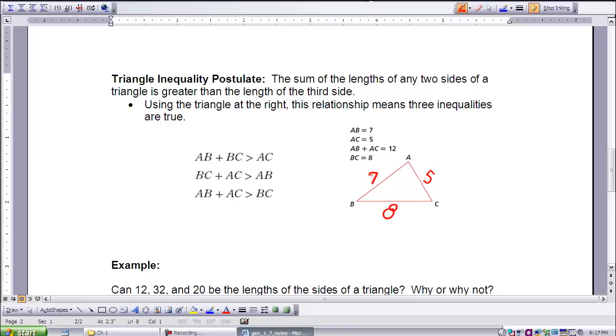Let's see. Is AB plus BC greater than AC? Let's see. AB is 7 plus BC, which is 8, is that greater than 5? Yes.